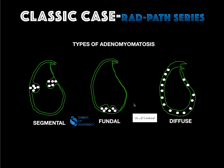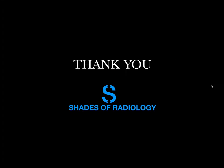There are three different types of adenomyomatosis of the gallbladder: segmental, fundal — where there is a predilection only in the fundal region — and sometimes diffuse, as in our case. Most of the time it may be either focal or diffuse, and sometimes segmental. Thank you all for listening.